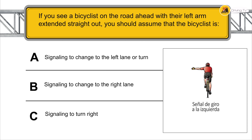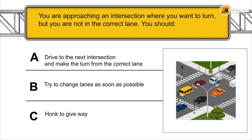If you see a bicyclist on the road ahead with their left arm extended straight out, you should assume that the bicyclist is signaling to change to the left lane or turn.